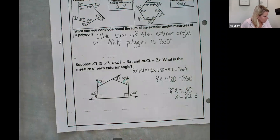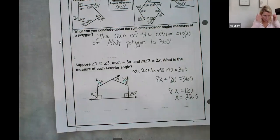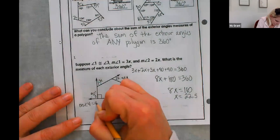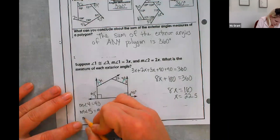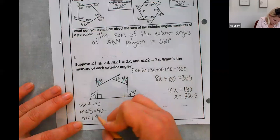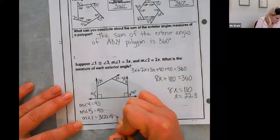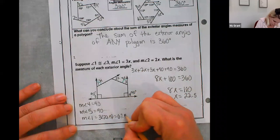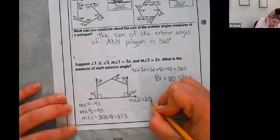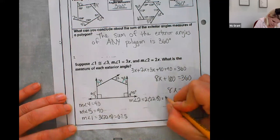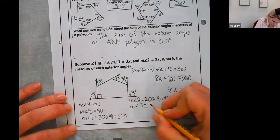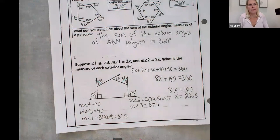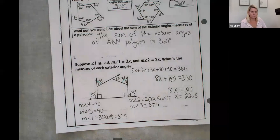So I'm then going to have to figure out each angle. Obviously, I know angle four and angle five are 90. Measure of angle one is three times 22.5, that's 67.5. Measure of angle two is two times 22.5, which is 45 degrees. And then obviously the measure of angle three is the same as one.